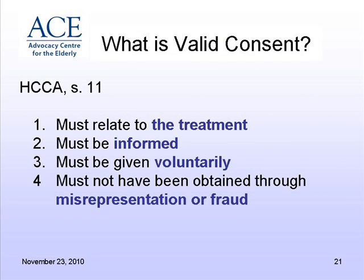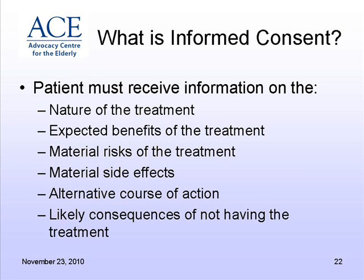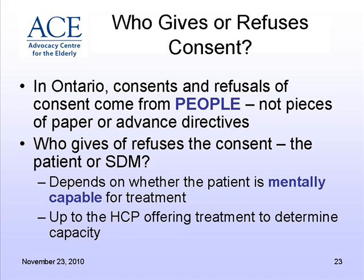Valid consent — hopefully you know these — must relate to the treatment, be informed, be voluntary, and not be obtained through misrepresentation or fraud. You have to provide information to the patient or their substitute under the Health Care Consent Act. In Ontario, consent comes from people, not from a piece of paper. If the person is capable, they consent, and it's up to the health care practitioner to determine if that person is capable — you don't need a capacity assessor or a psychiatrist. It's up to the health practitioner proposing the treatment to decide whether or not the person understands and appreciates the treatment.